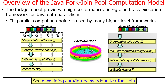The parallel computing engine — the fork-join pool, the thing here in the middle — is used by lots of other things. We'll cover some of that later: parallel streams and completable futures, but it's also used by many other higher-level programming frameworks.